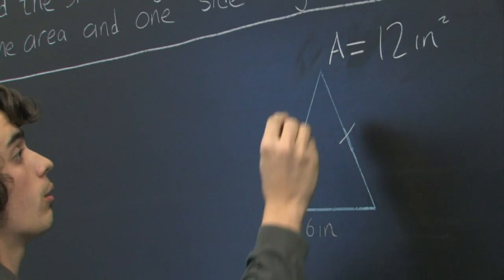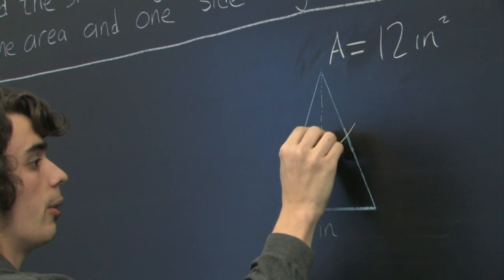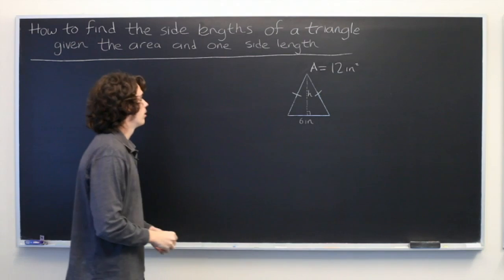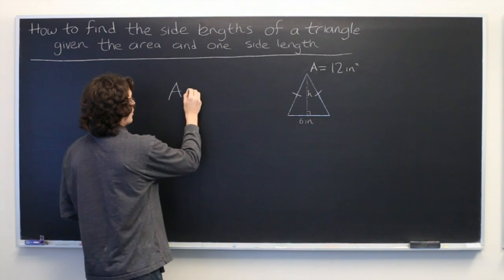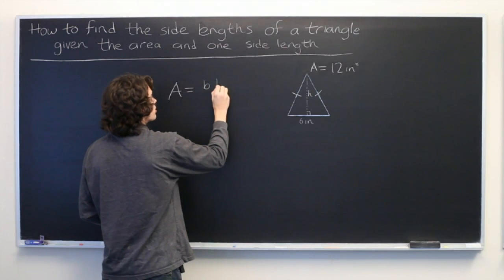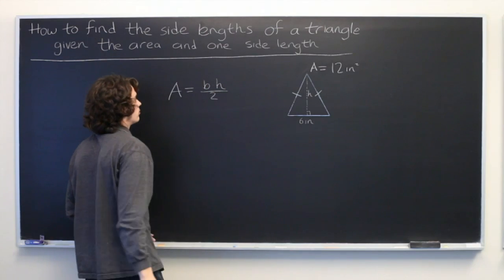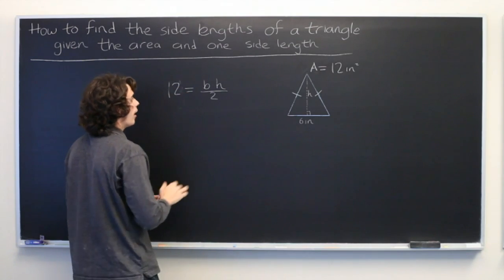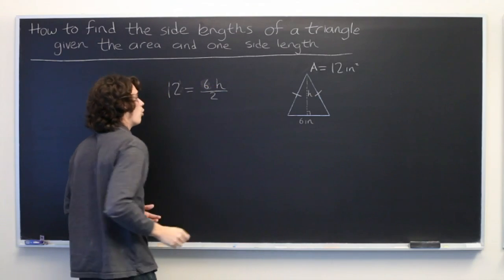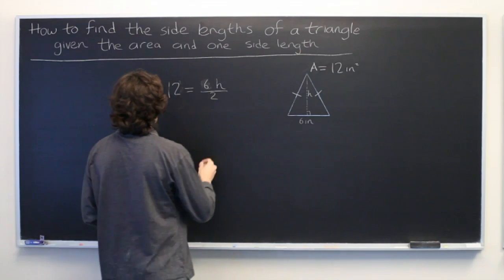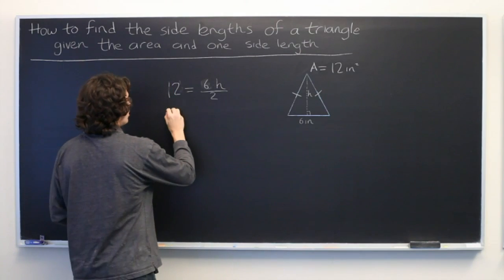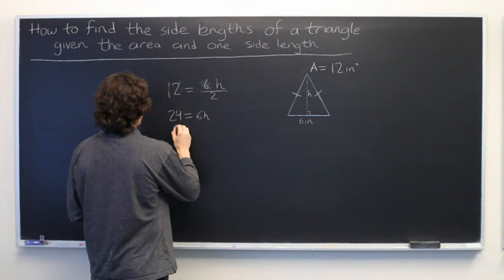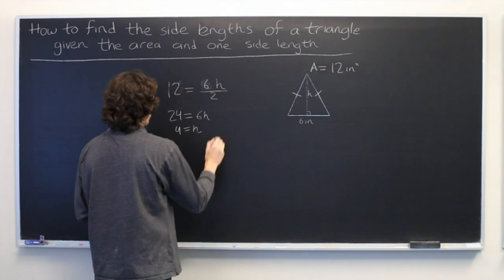Now, the other quantity that we need in order to solve this is we need to know the height, which we'll call h. A simple formula can relate these three quantities: the area is equal to base times height divided by 2, where we know that our area is 12 and we know that our base is 6. So, all we need to do is solve for h. Let's multiply both sides of the equation by 2, and we get 24 equals 6h. From here we can just divide by 6.